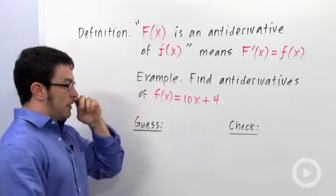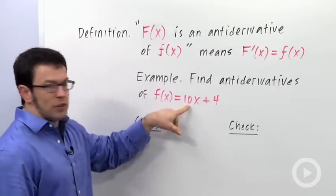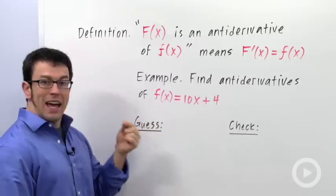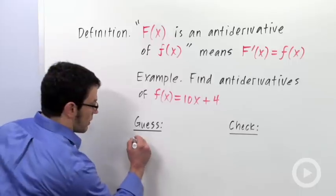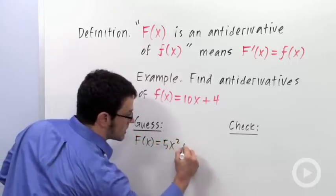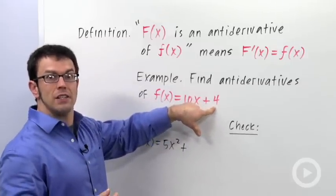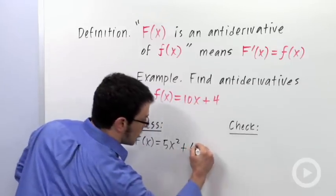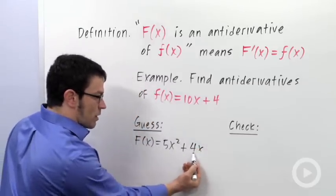Now, I can think of x squared has a derivative of 2x. So what would I have to do to x squared to make the derivative 10x? Multiply it by 5. So I could start with a capital F, which is 5x squared plus. And what function's derivative is 4? Well, 4x has a derivative of 4. So capital F of x equals 5x squared plus 4x.